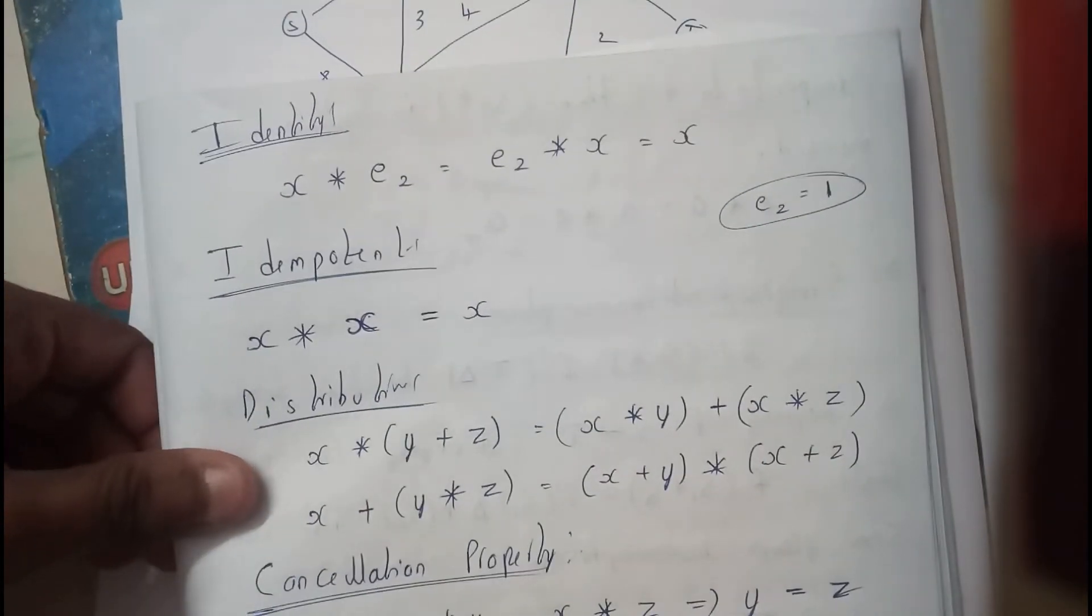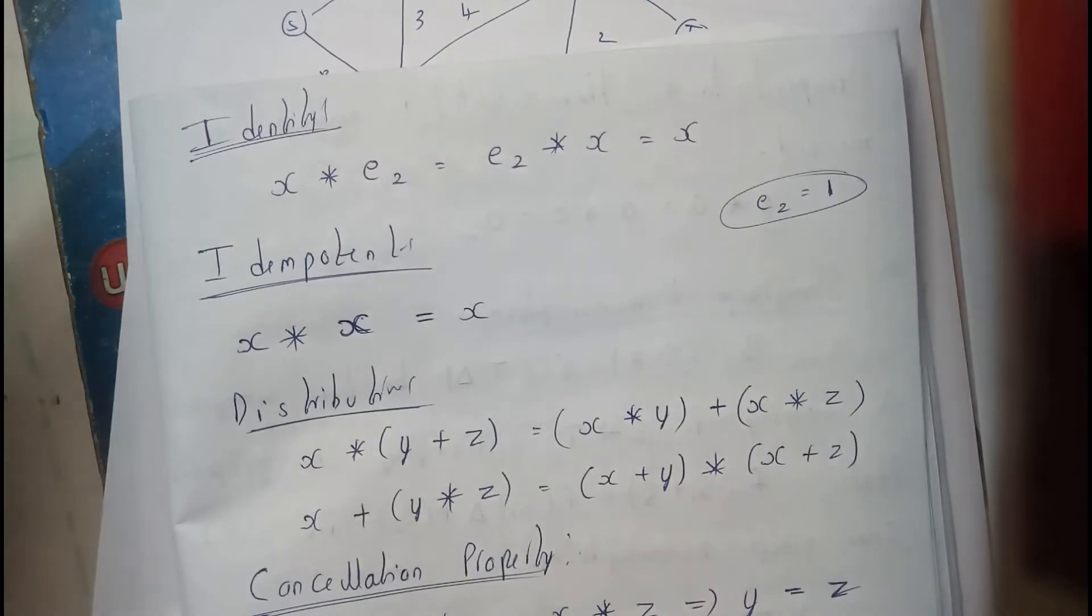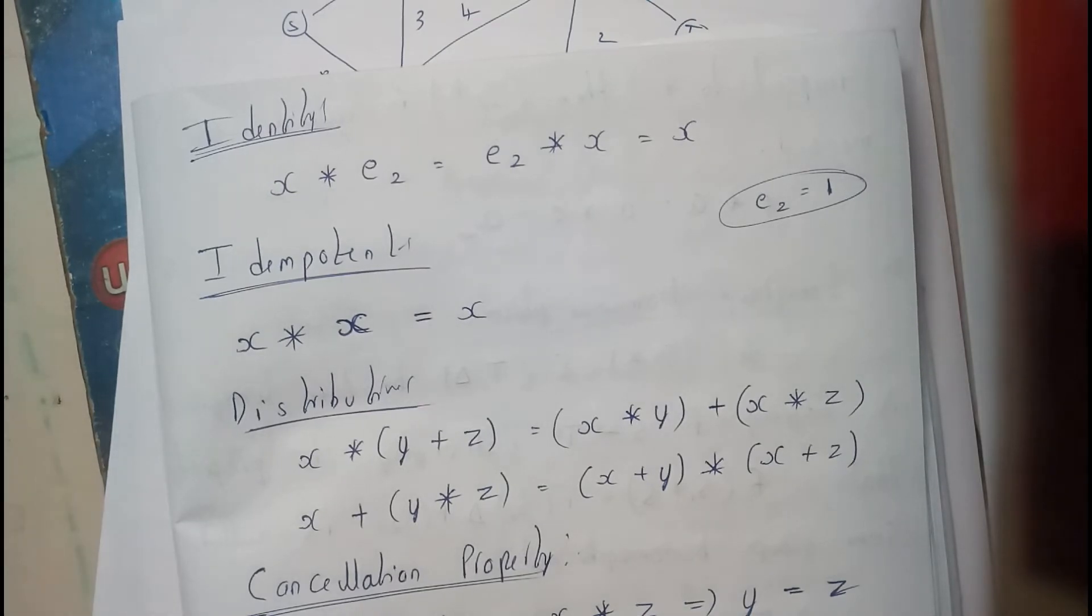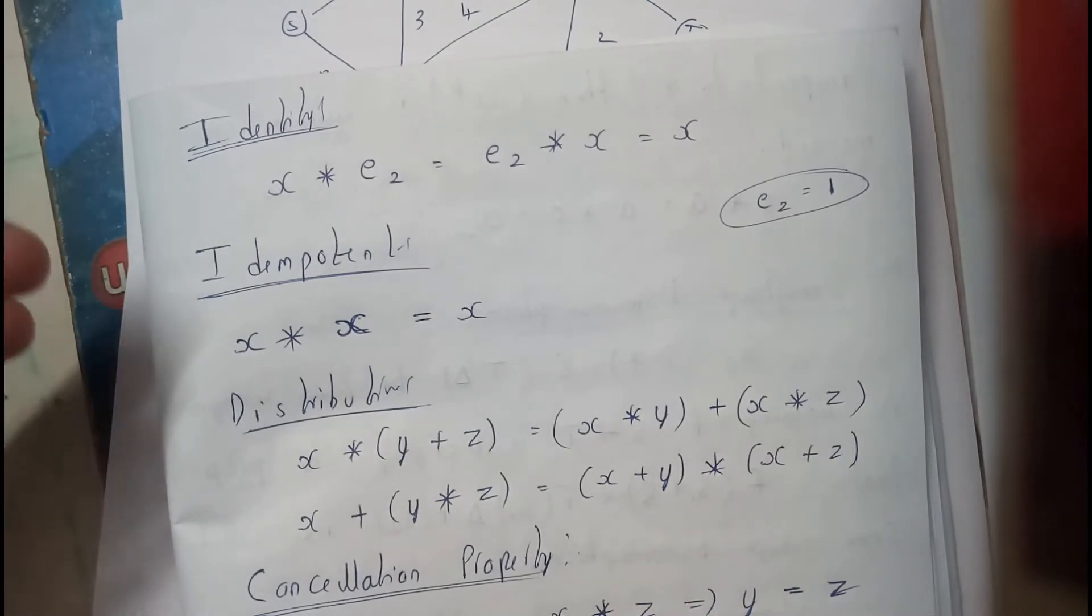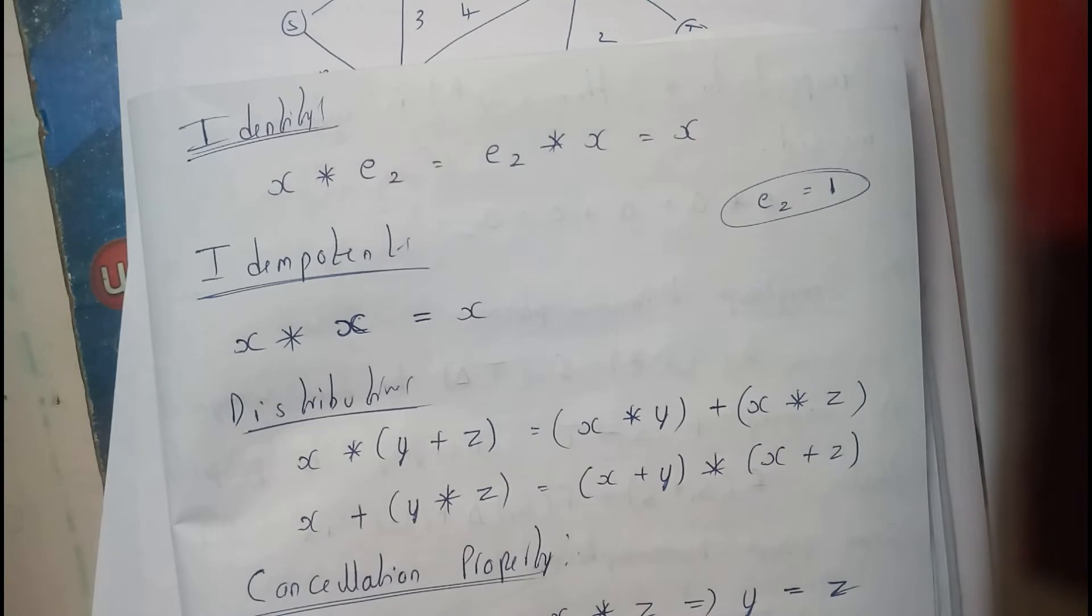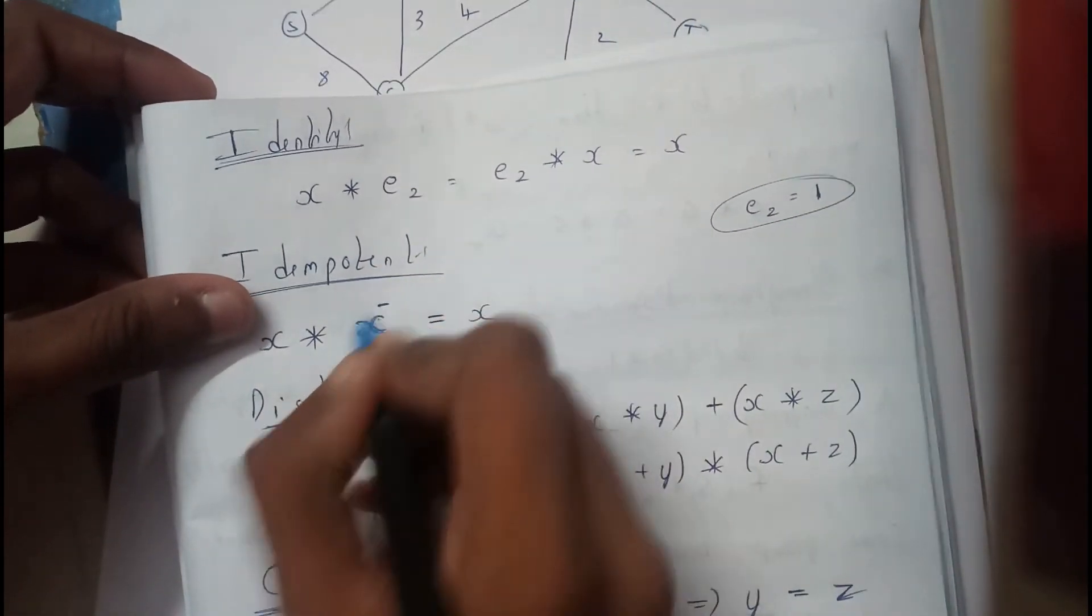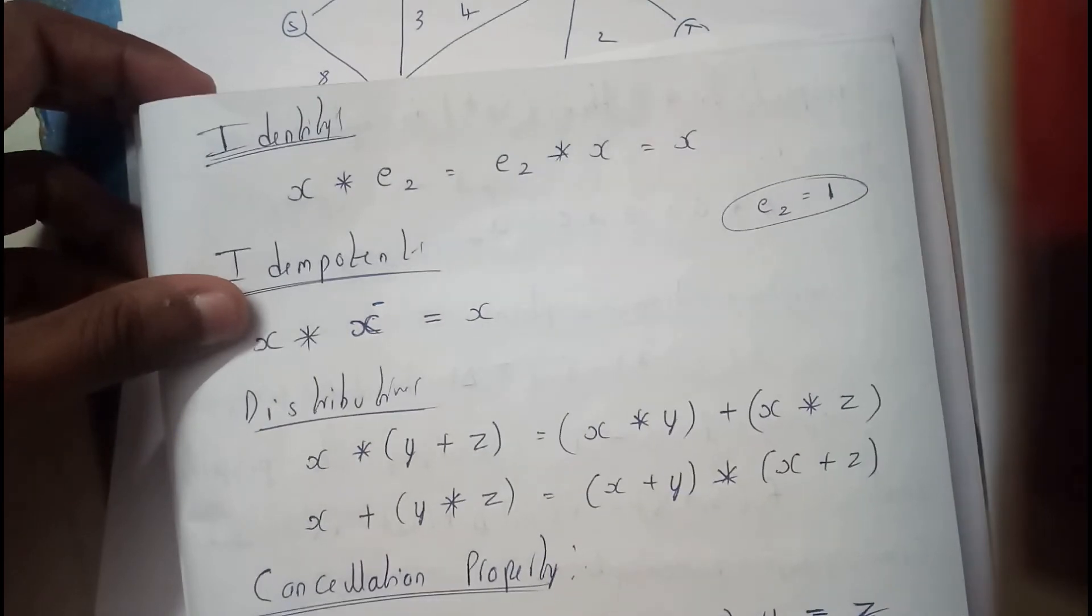Next, identity: x * e2 equals e2 * x equals x. I think I wrote it in reverse. Just a second, sorry. That may be correct.